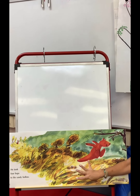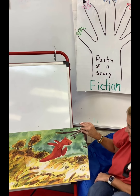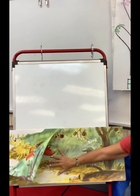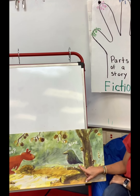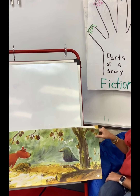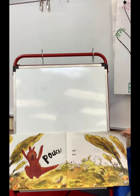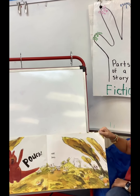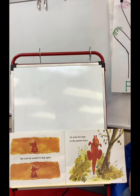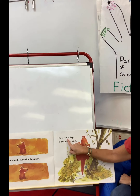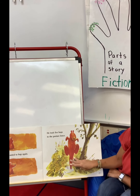But soon he wanted to hop again. He took four hops to the sandy hollow. Hop, hop, hop, hop. 'Who are you?' 'Bird.' What do you think is going to happen? 'Pouch!' said Joey. But soon he wanted to hop again. He took five hops to the pasture fence. Hop, hop, hop, hop, hop.